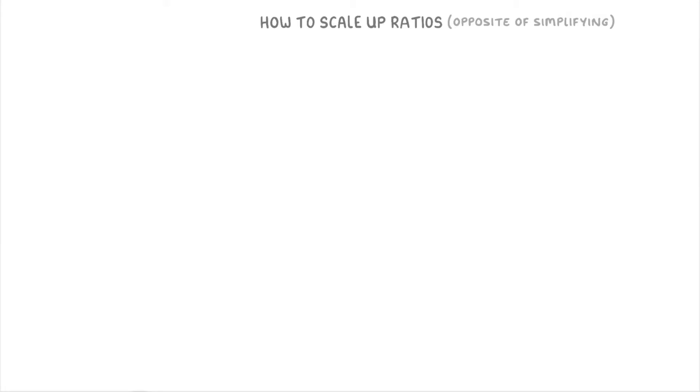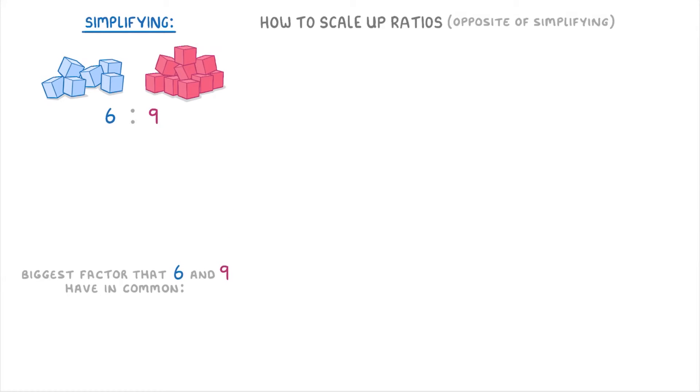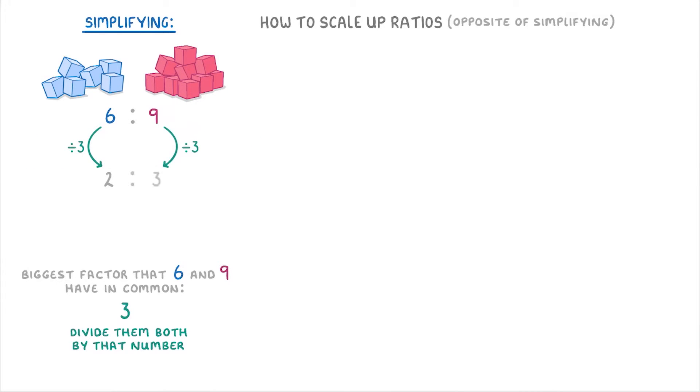To quickly recap though, if we take a ratio like 6 to 9, which could represent blue cubes to red cubes for example, then to simplify it all we do is look for the biggest factor that 6 and 9 have in common, which is 3, and then we divide both of them by that number. So we do 6 divided by 3 to get 2, and 9 divided by 3 to get 3, so our simplified version is 2 to 3.